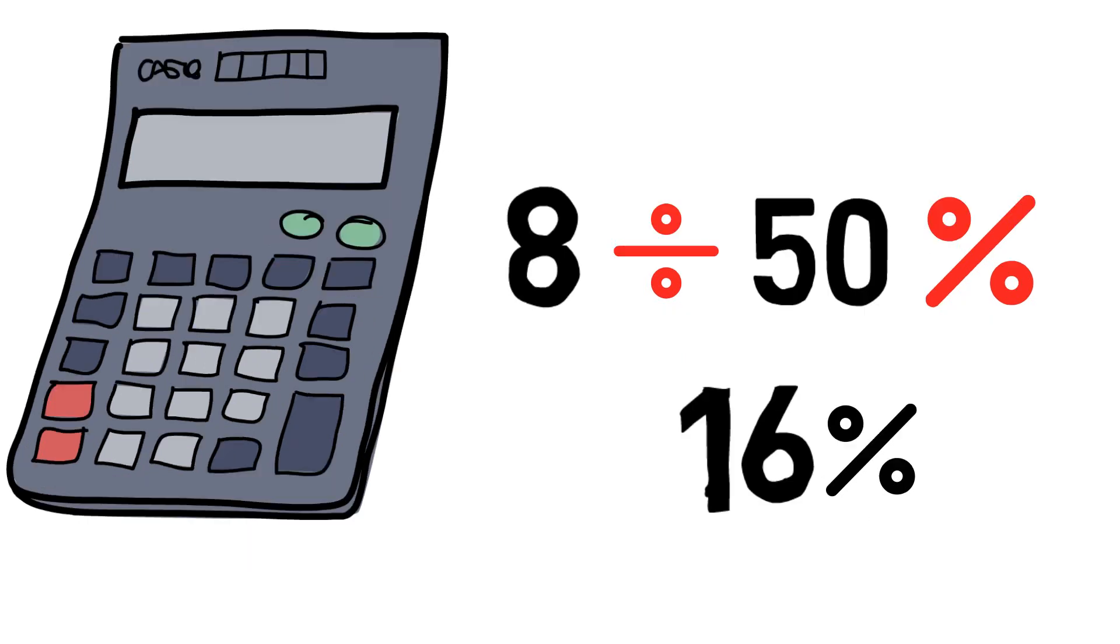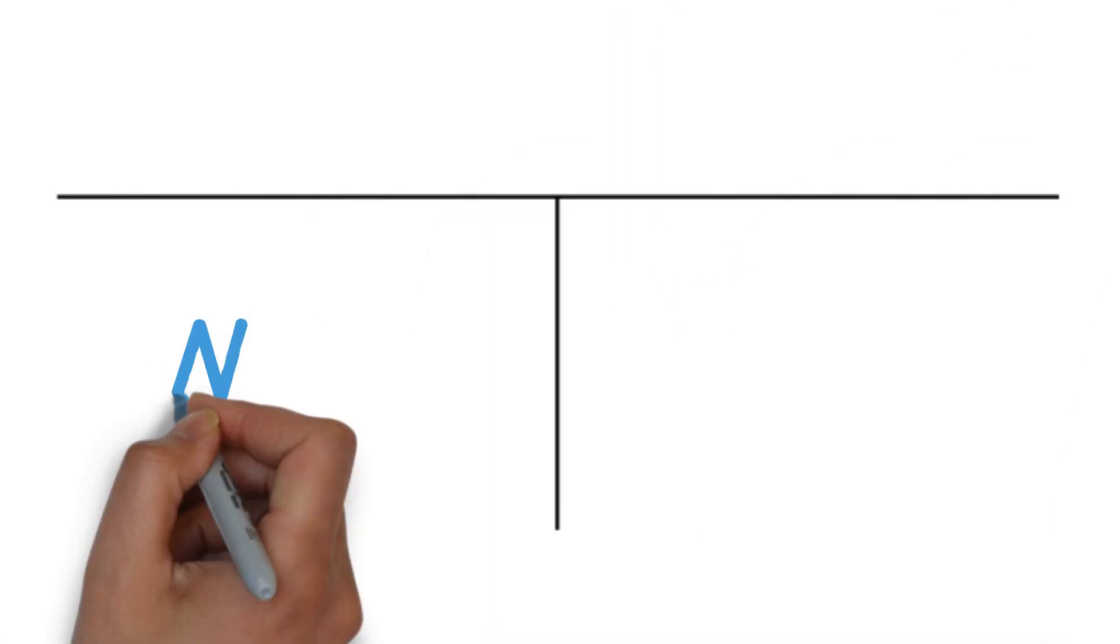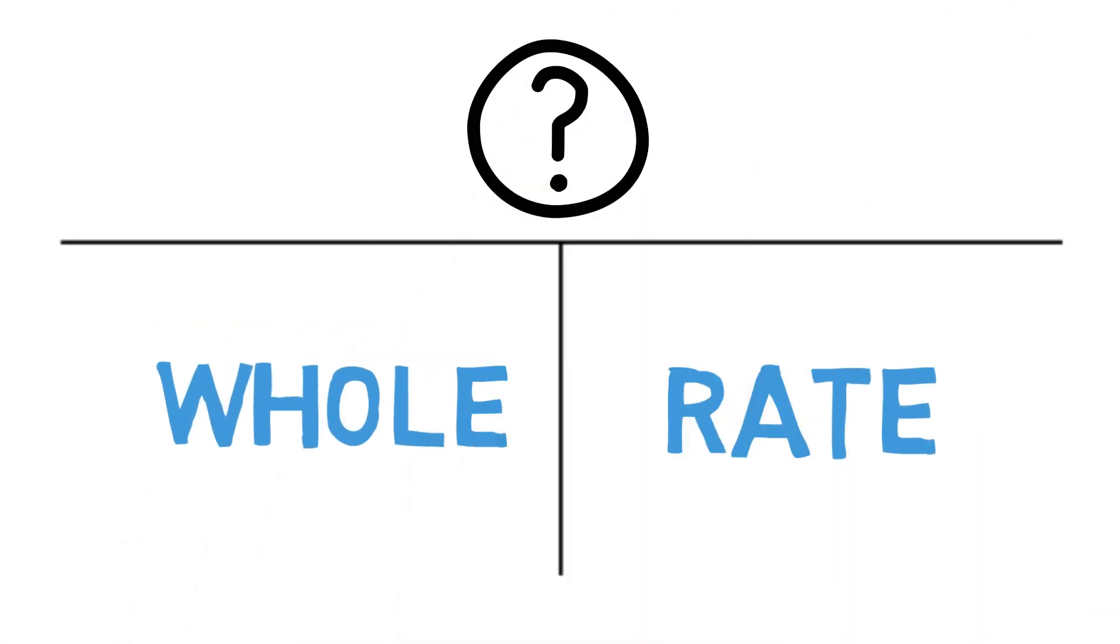On a different math problem, they might give us the whole and the rate, and then ask for the part. So in this case, our two known variables are separated by the vertical line, which tells us to multiply straight across.